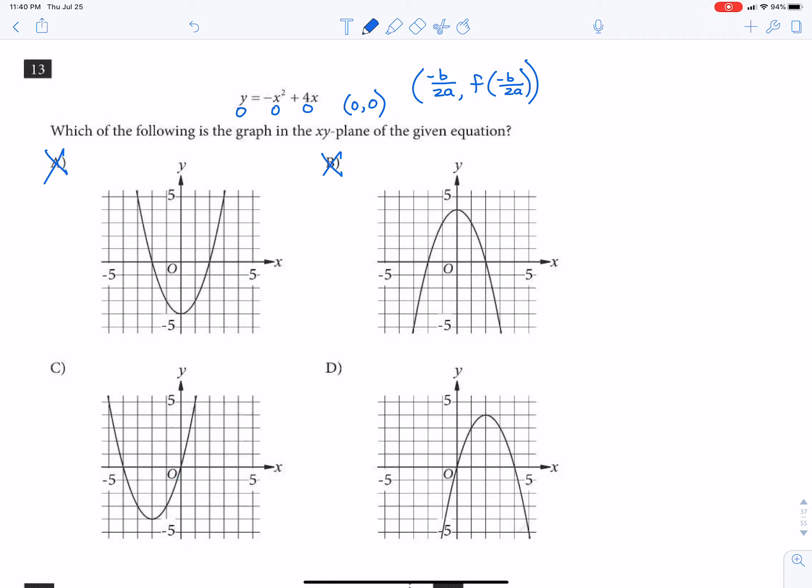So then I would just pick another coordinate, maybe like 2,4 from this one and see if it works. That would be 4 equals negative 4 plus 8, and that checks out, so that's true. So then D would be the answer.